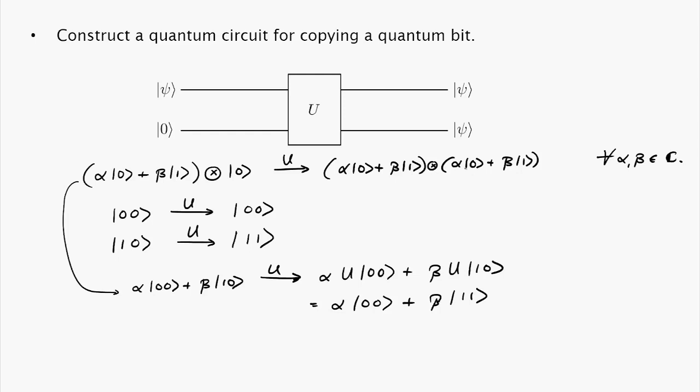But this is not the same thing as what we are looking for which is a tensor product of alpha zero plus beta one with itself. Because this is just alpha squared zero zero plus alpha beta zero one plus alpha beta one zero plus beta squared one one.